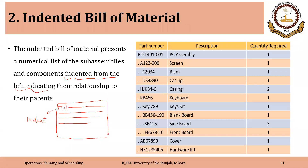The topmost level product has no indentation. In this example, the topmost level product is the PC assembly, so there is no indentation here. Then there is a dot — you can assume this dot to be one indent or one tab, like the tab you use in Microsoft Word. So this clearly shows that PC has screen as one of its components.